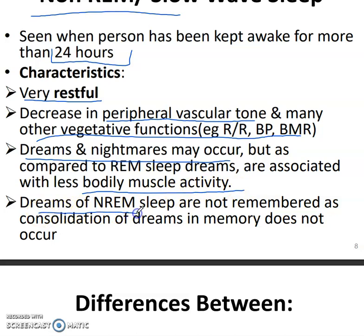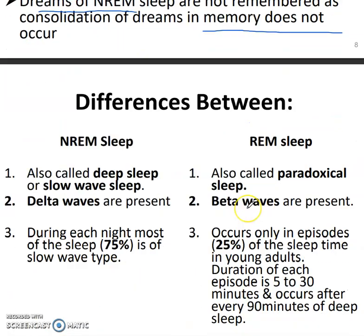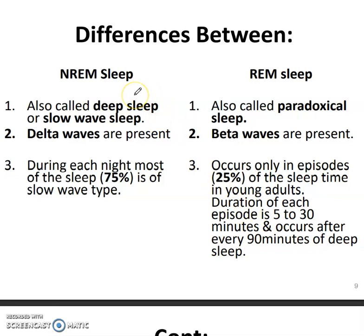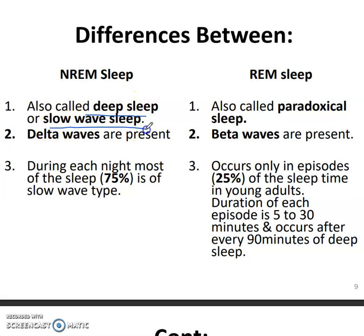Dreams are not remembered in non-REM sleep because memory consolidation does not occur. In REM sleep, dreams are remembered by the person. Non-REM sleep is called deep sleep or slow wave sleep, while REM sleep is called paradoxical sleep. Delta waves are present in non-REM sleep.